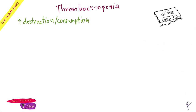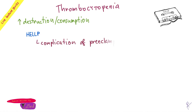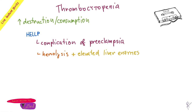And then you have HELLP — a complication of preeclampsia. Preeclampsia: a pregnant woman having proteinuria, hypertension, and as a bonus, elevated liver enzymes and thrombocytopenia. So she bleeds. HELLP stands for: H = hemolysis, EL = elevated liver enzymes, LP = low platelets.